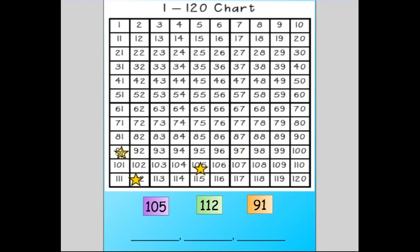Since the 120 chart is arranged from least to greatest, the first number that I see would be the least amount. So 91 will go in the first place. Then I continue from 91 going down the 120 chart. The next number I see is 105, so 105 is the next number.